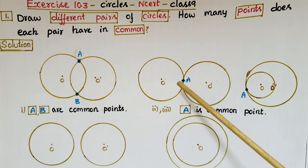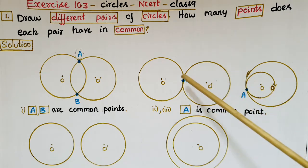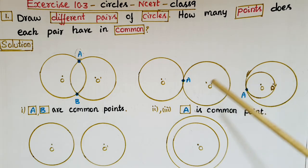And if you see the second and third figures, in both of these figures, A is the common point for the two circles.